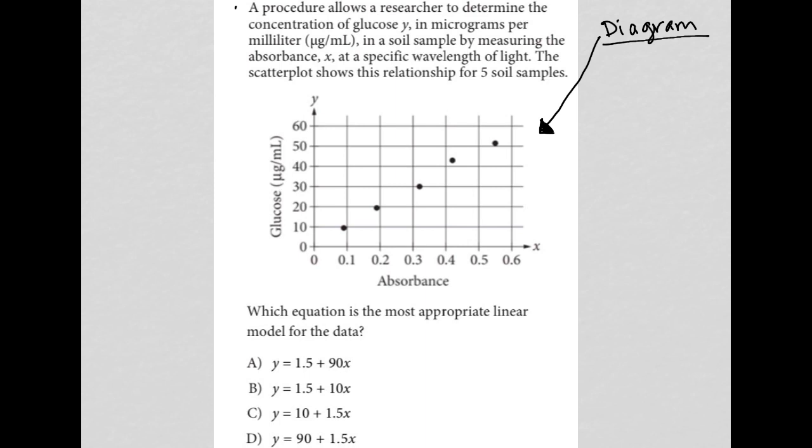The information provided says a procedure allows a researcher to determine the concentration of glucose Y, so our Y-axis is glucose in micrograms per milliliter, in a soil sample by measuring the absorbance X, so absorbance is our X-axis, at a specific wavelength of light. The scatter plot shows this relationship for five soil samples. So we have our five soil samples here.